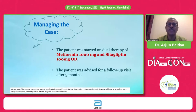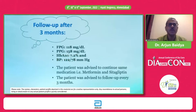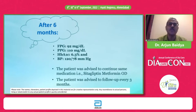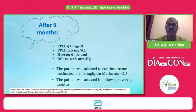Coming back to the case: this patient was started on dual therapy of metformin 1000 mg and sitagliptin 100 mg as guided by the guidelines, with a follow-up visit after three months. At follow-up, blood glucose came down to fasting 118, postprandial 158, HbA1c 7.2%, and blood pressure was normal. The patient was advised to continue the same medications. After six months, blood glucose normalized — fasting 92, postprandial 110, and HbA1c 6.3% — which is the desired target for this newly detected young patient with no comorbidities, where the stringent target is less than 6.5%. The patient was advised to continue sitagliptin-metformin fixed-dose combination and follow up every three months.